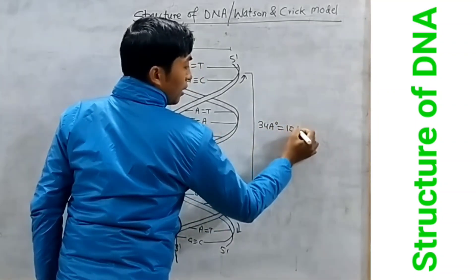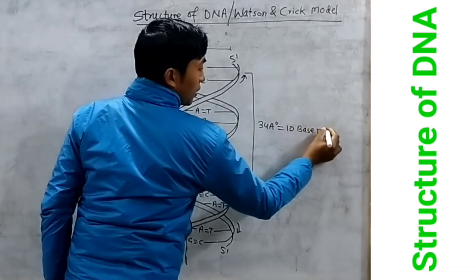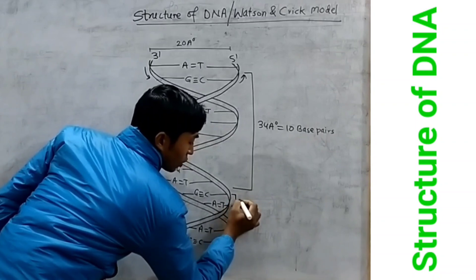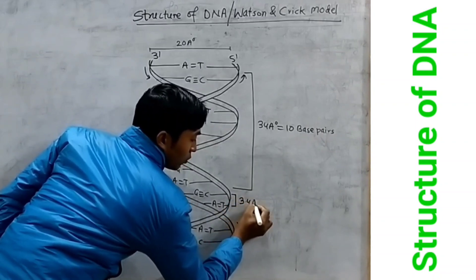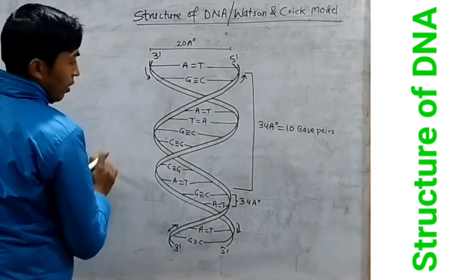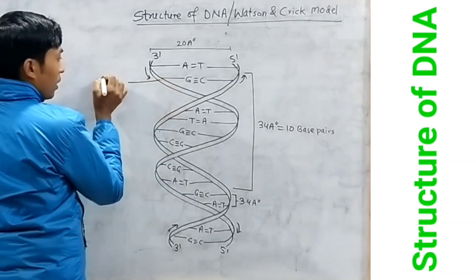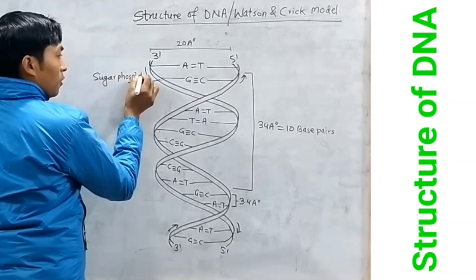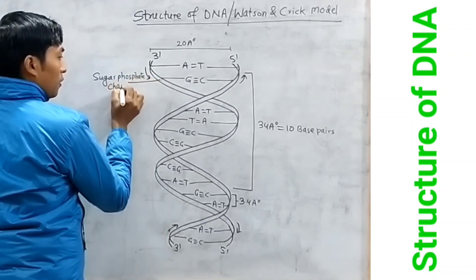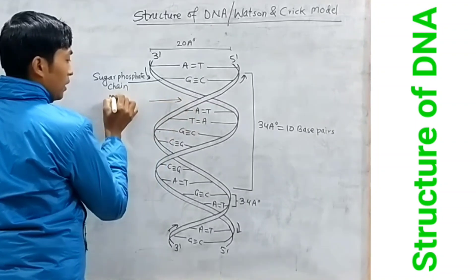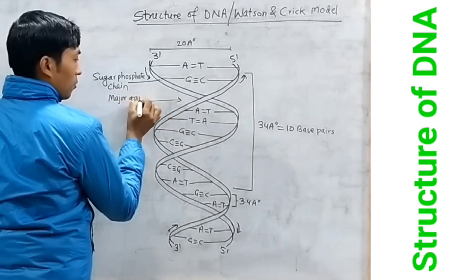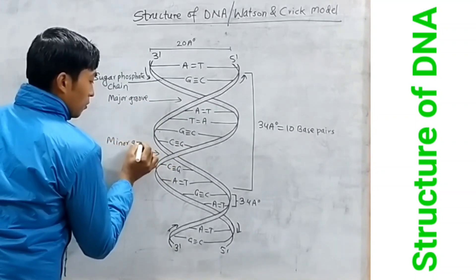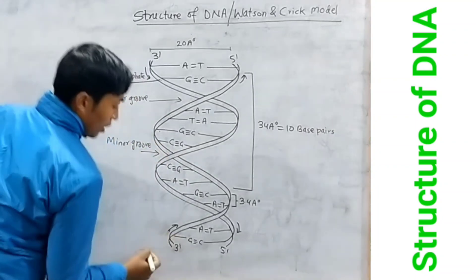It includes 10 base pairs. The distance between two nitrogen bases is about 3.4 angstroms. It is about 4.5 angstroms. This is the sugar phosphate chain. This is the major groove, and this is the minor groove.